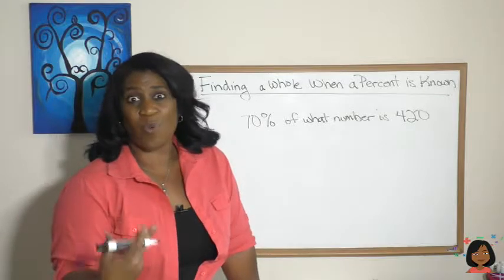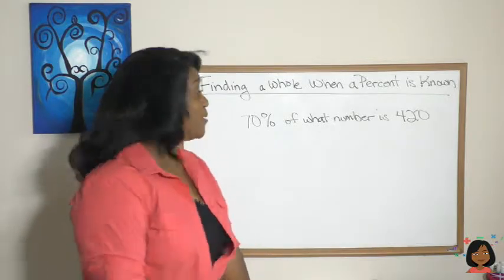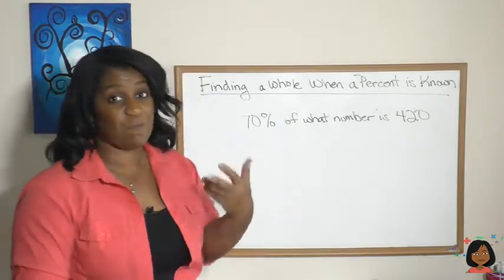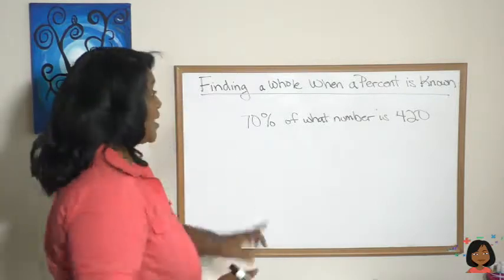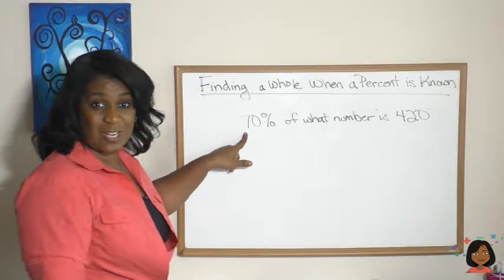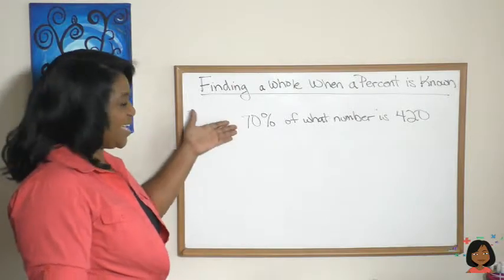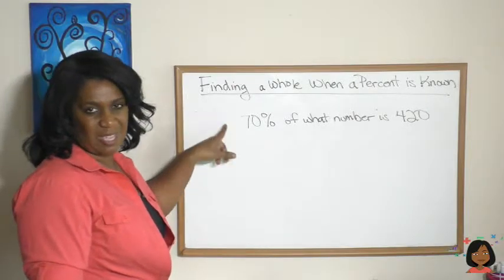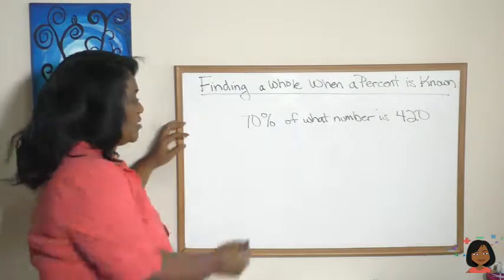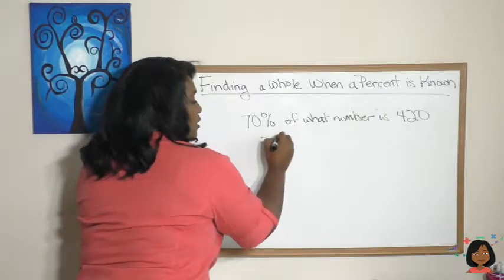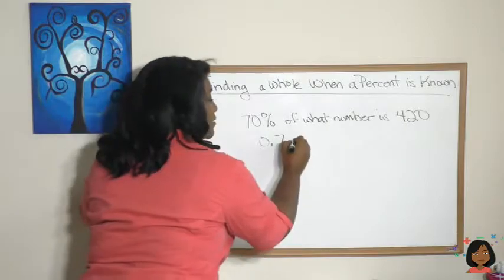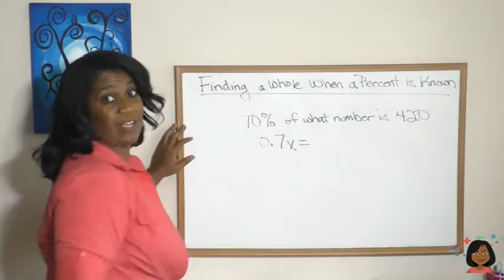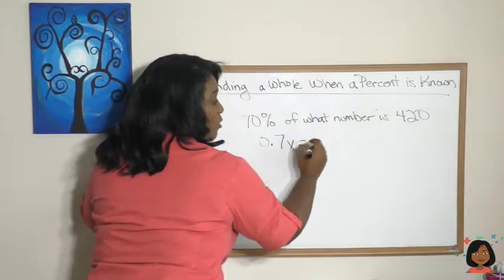Now you can use this in a word problem or you can just have a straight math problem like this: 70% of what number is 420? The process is still the same. Take your percent, turn it into a fraction or a decimal. And again, when it's something as easy as a percent with a zero on the end, decimal is easiest way to go. So 0.7 times what number, let's just use x, equals 420 because 'is' turns into an equal.